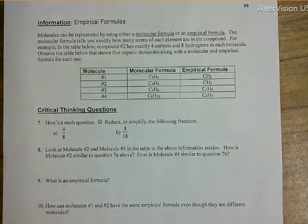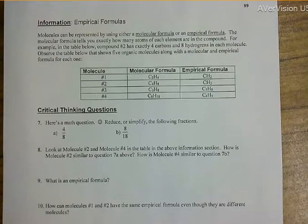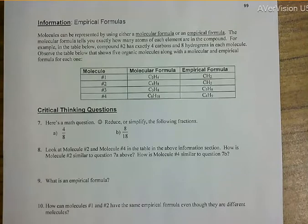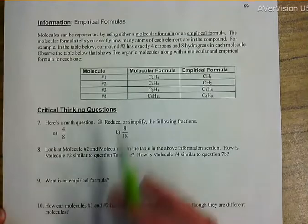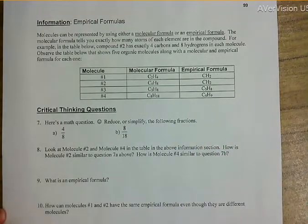Empirical formulas: molecules can be represented using either a molecular formula or an empirical formula. The molecular formula tells you exactly how many atoms of each element are in the compound. For example, compound number two has exactly four carbons and eight hydrogens in each molecule. The table below shows five organic molecules along with a molecular and empirical formula for each one.